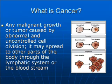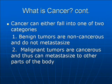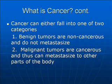The illustration at your right shows the progression of tumor cells to cancer cells. Cancer can either fall into one of two categories. The first category is benign tumors, which are non-cancerous and do not metastasize to other sites within the body. The second type is malignant tumors, which are cancerous and thus can metastasize to other parts of the body.